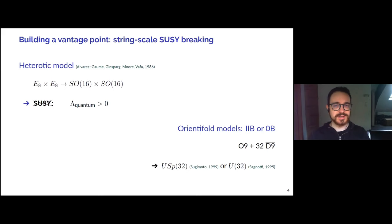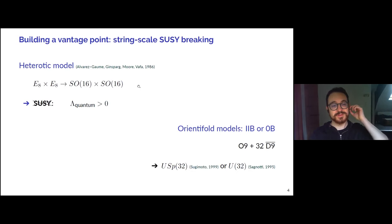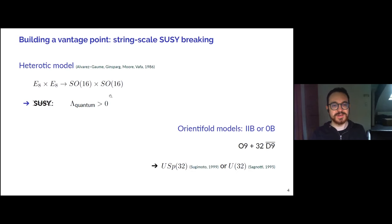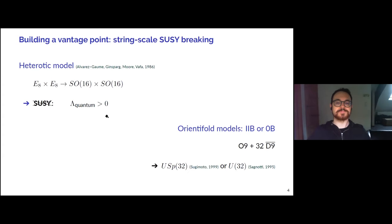In the heterotic case, this is achieved by a non-supersymmetric projection of the supersymmetric exceptional model. Once this projection is performed, the absence of supersymmetry doesn't protect the vacuum energy from getting quantum corrections anymore. Indeed the vacuum energy does get a non-zero value at one loop, which is of the order of the string scale, because all of this is happening at the string scale.